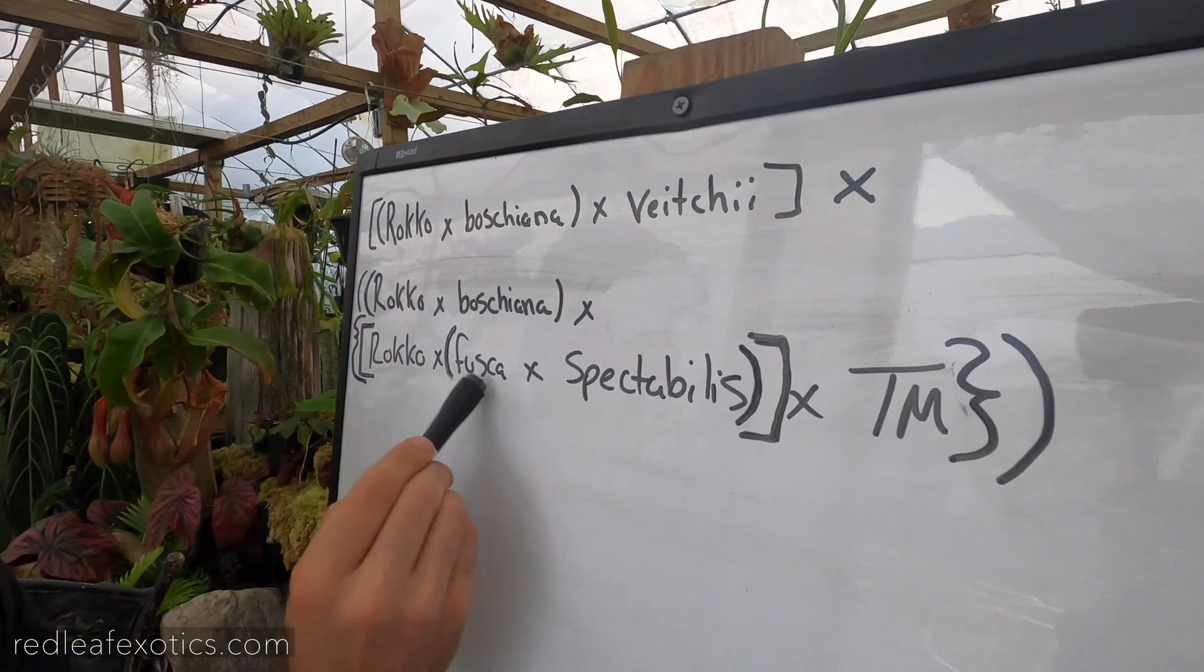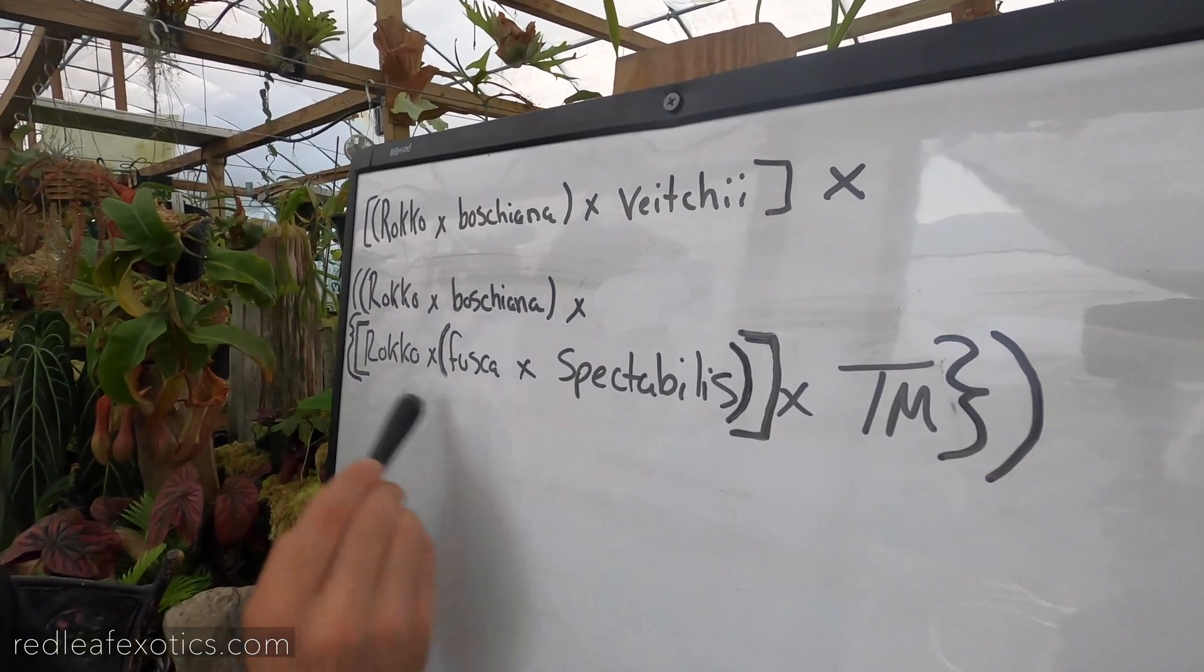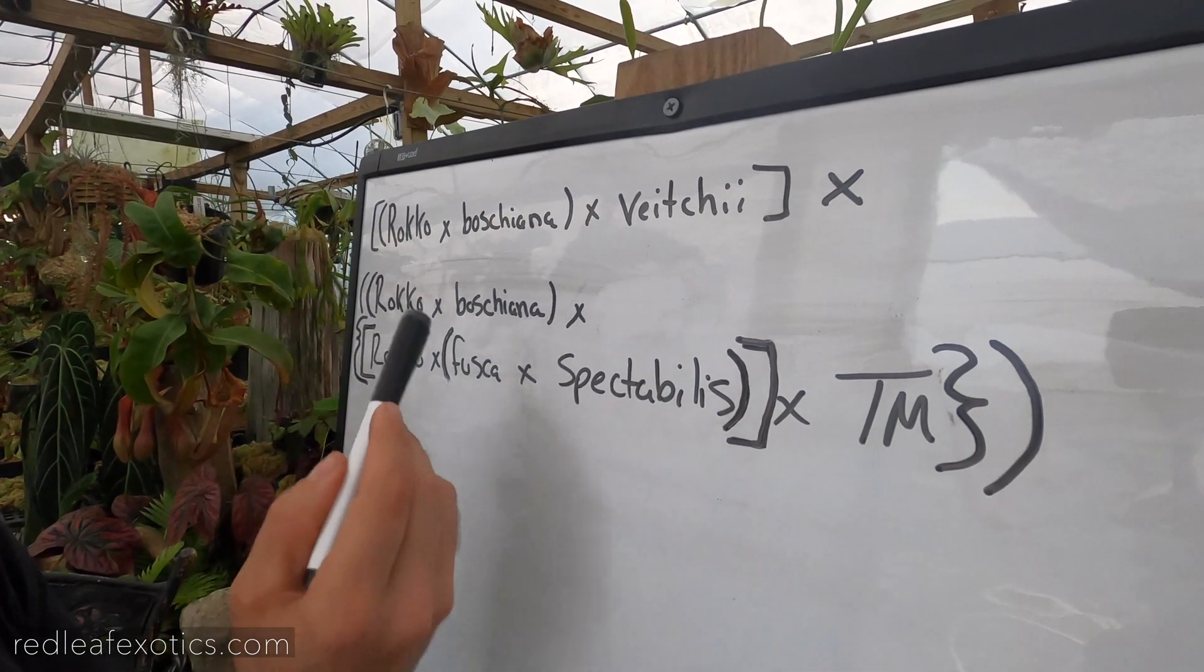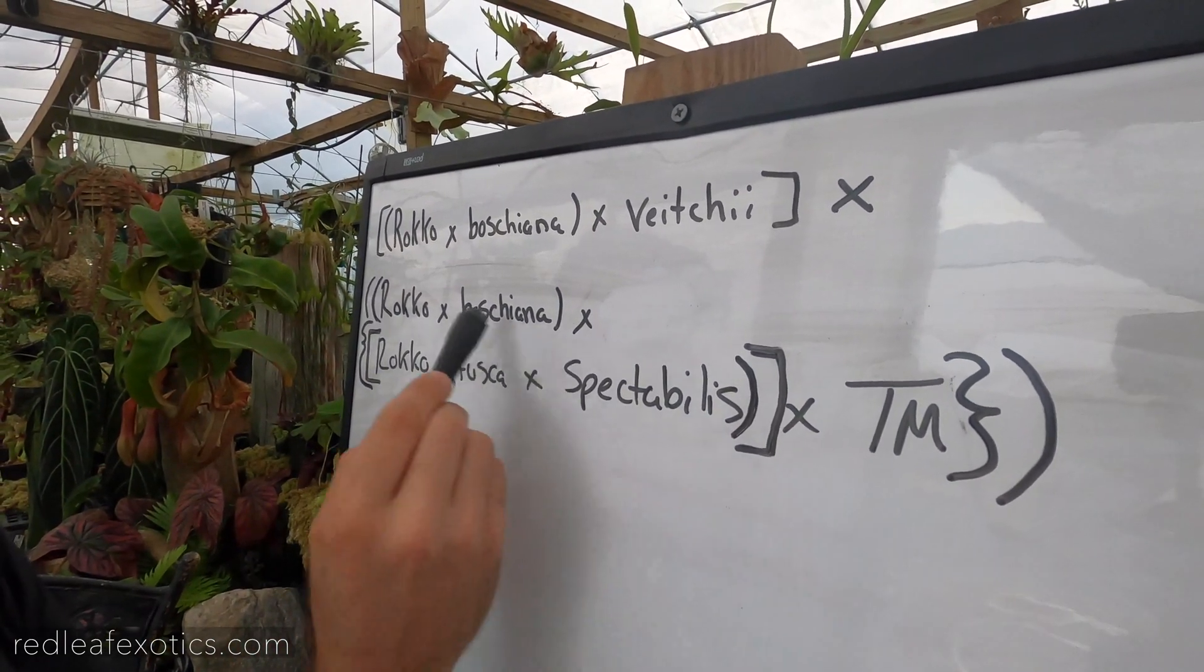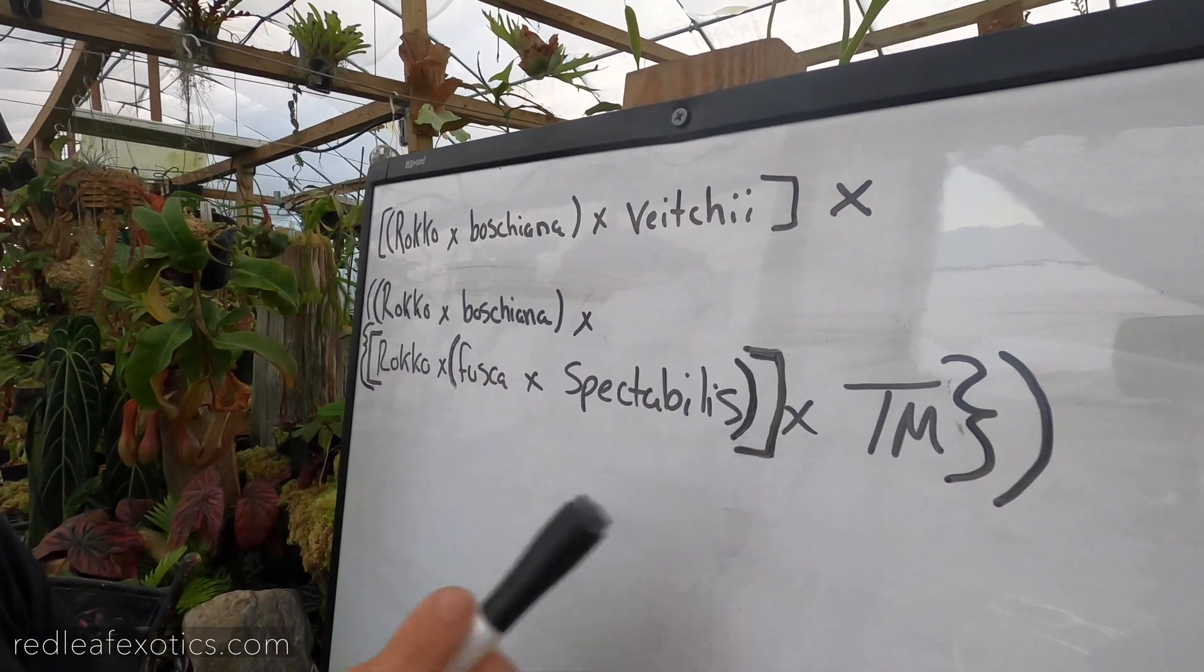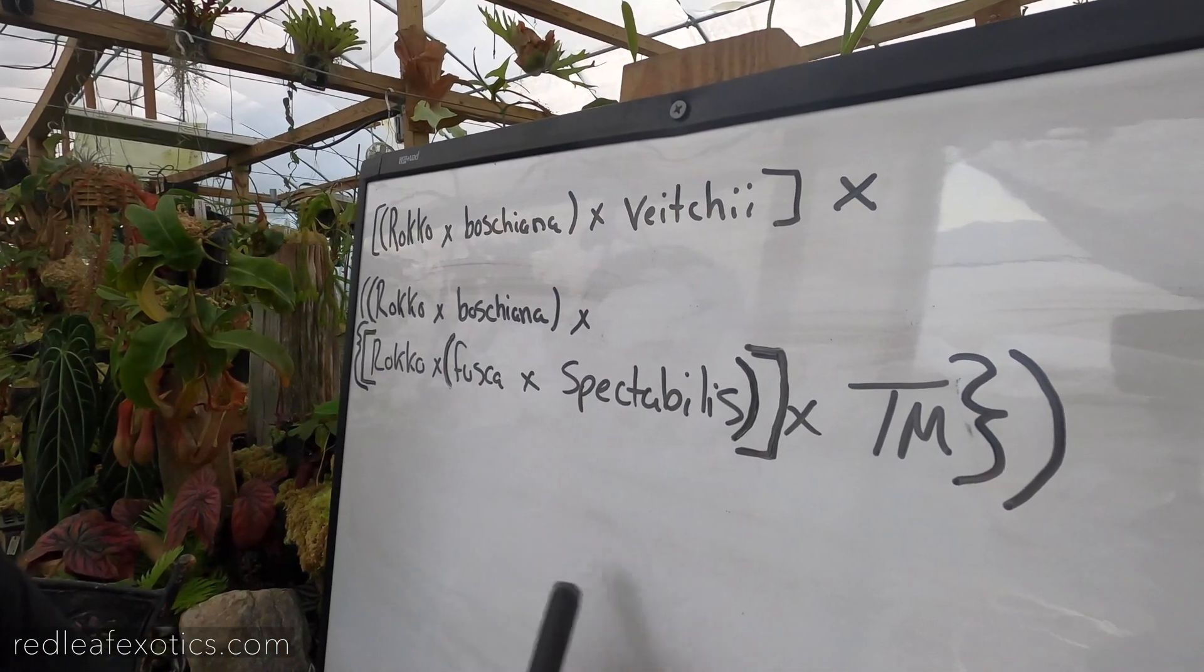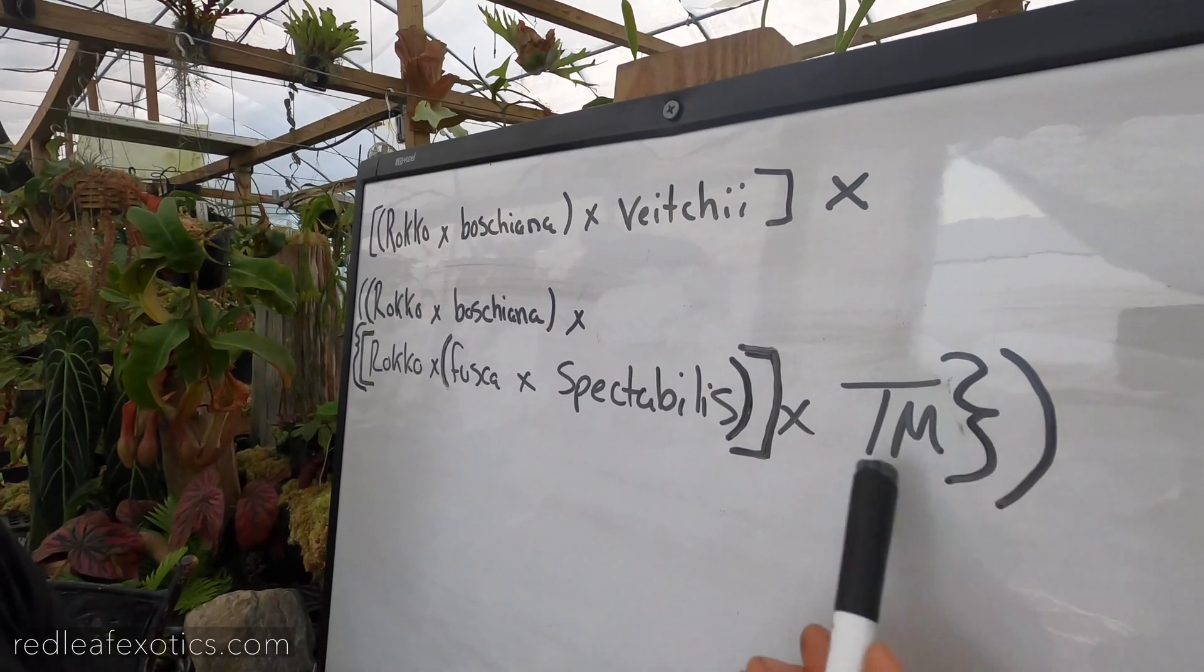So then they crossed Roco-Fusca-Spectabilis, this hybrid, with Trasmadiensis. And then they bred it with other things. So once you get past the parentheses, you go into your square brackets. And then after that would come your braces or little whale tails.